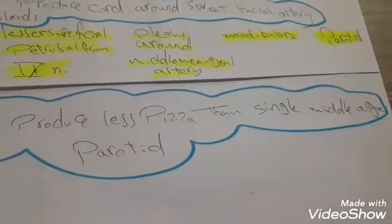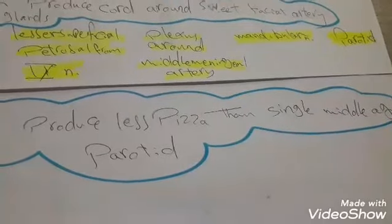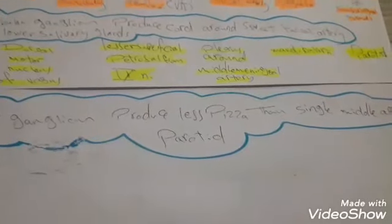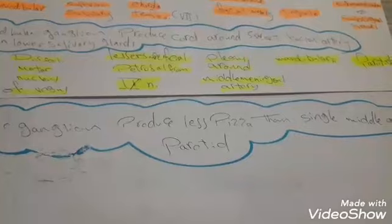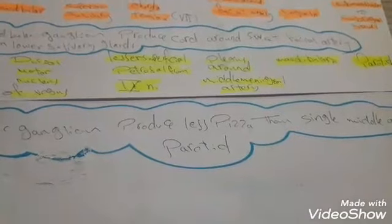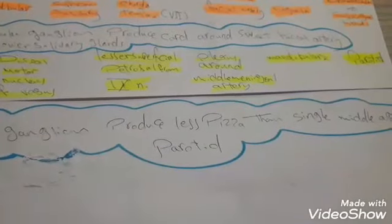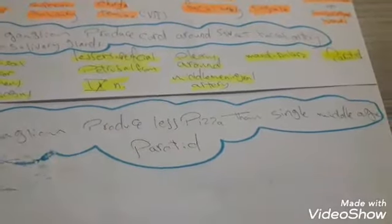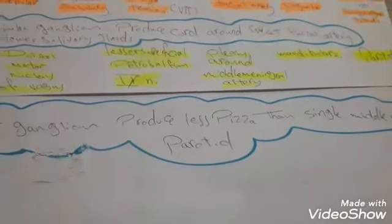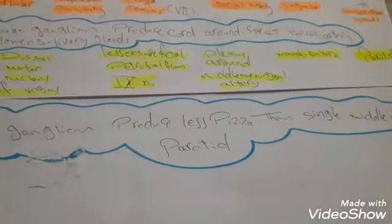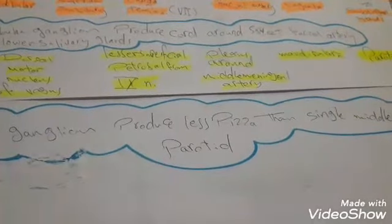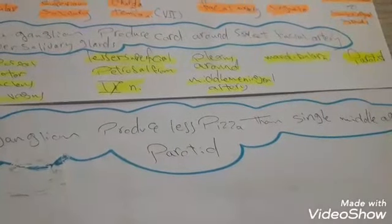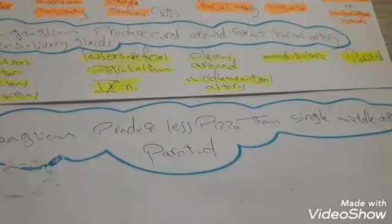The mnemonic is: 'Otic ganglion — produce less pizza than single middle age parotid.' Here, 'less pizza' refers to the lesser petrosal nerve (parasympathetic root), 'middle' refers to the plexus around the middle meningeal artery (sympathetic), and the target is the parotid gland.